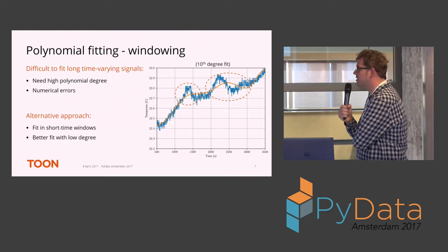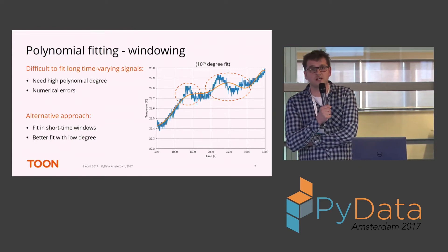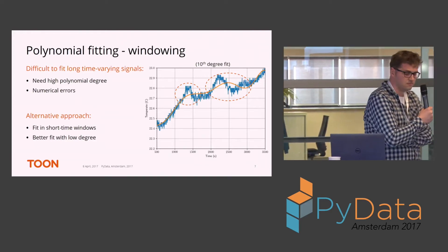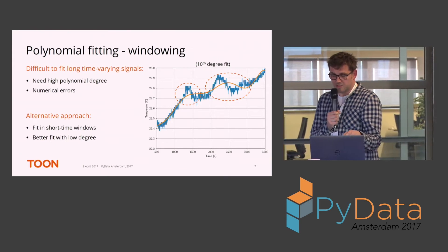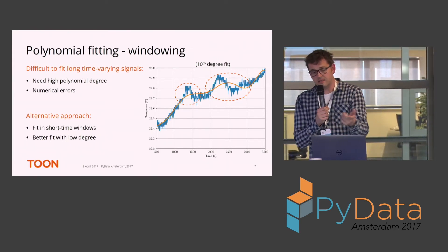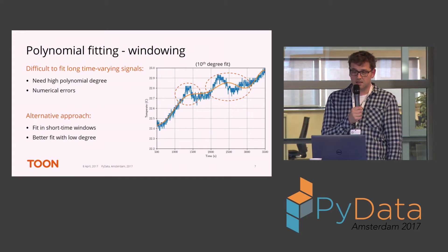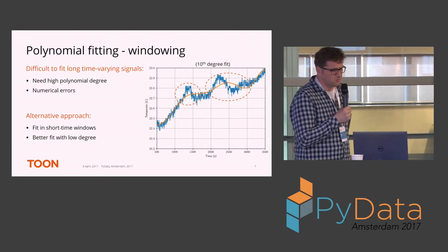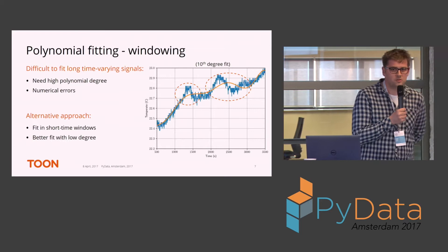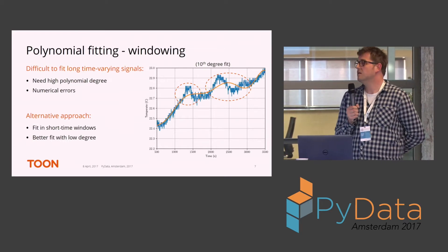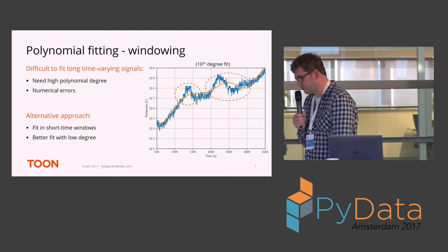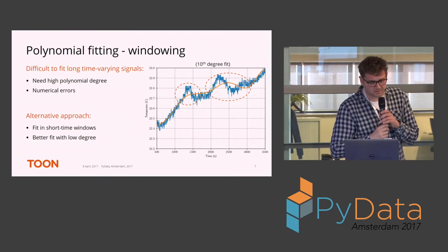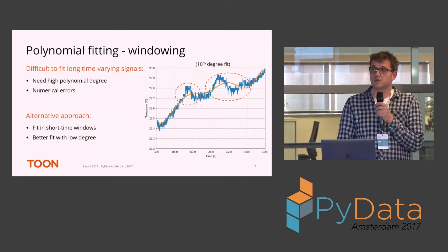One issue with this polynomial fitting approach is that for very long signals you need higher polynomial degrees to estimate the underlying clean signal. For this temperature signal of around one hour, I already needed a tenth-degree fit and it still had problems. You also quite often run into numerical errors if you take higher degrees — starting around degree 11 or 12 you get numerical errors and it will not give a solution.